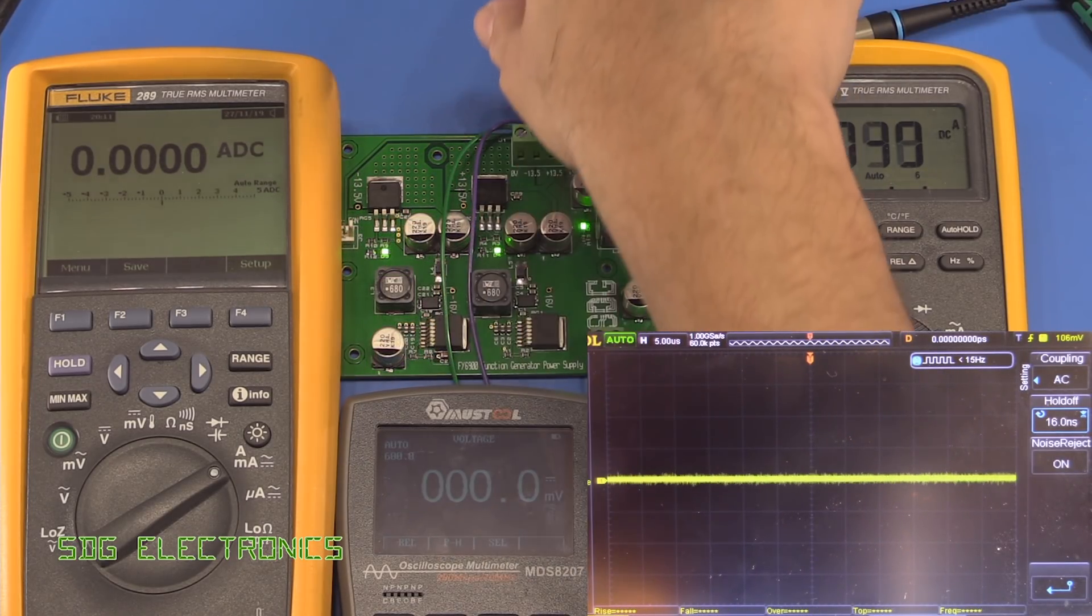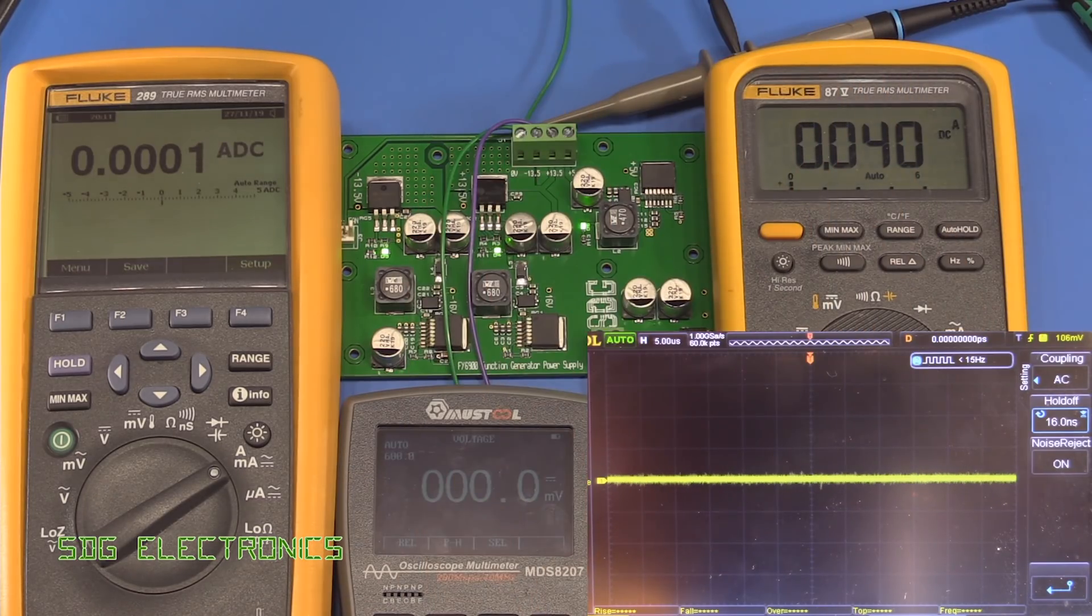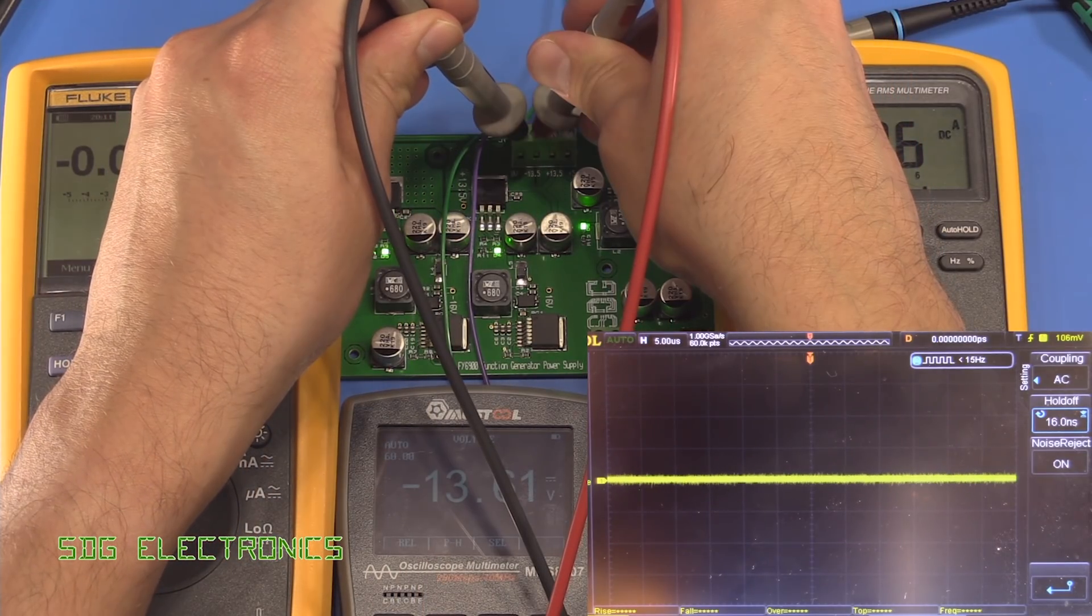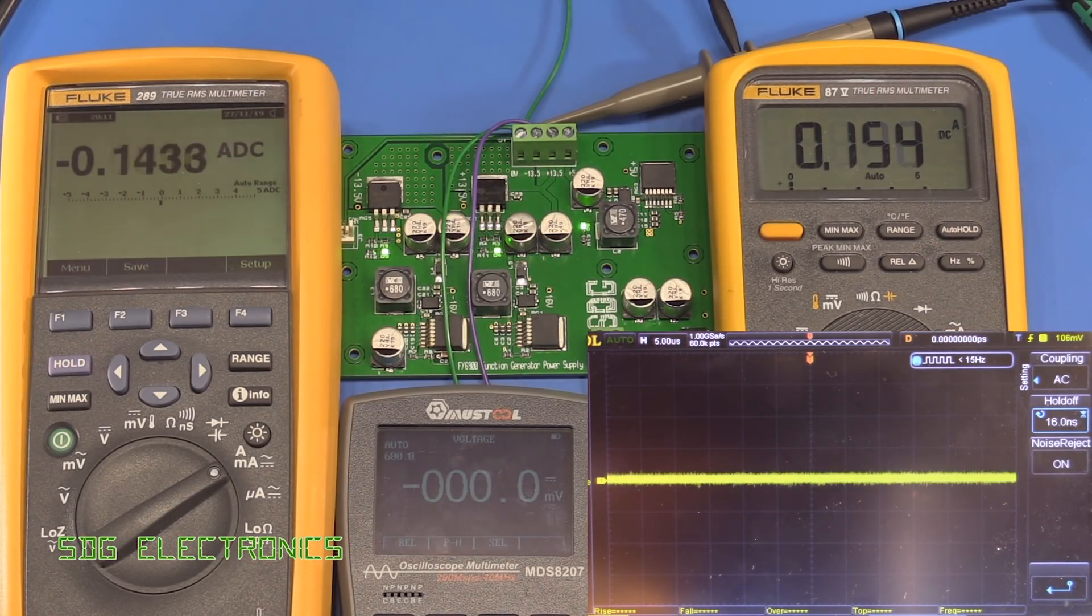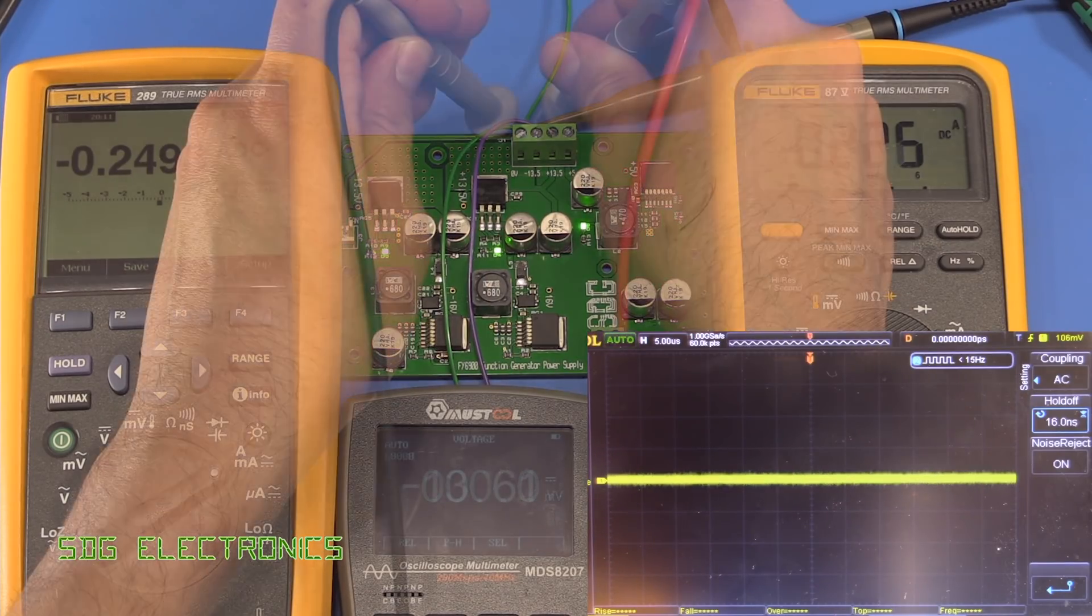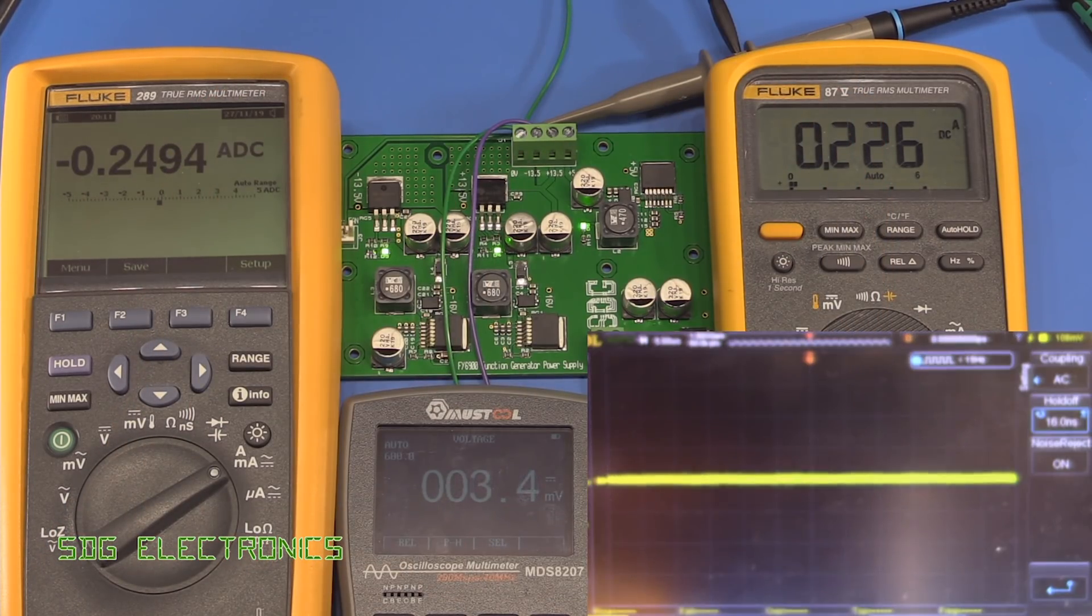We're now looking at the minus 13 and a half volt rail. Again we're seeing very little noise here. Let's turn on the load and set it to about 100 milliamps or so. That looks pretty good. It's very little noise. Again, let's have a look at the output and just check that we're reading what we should do. Yeah, minus 13 and a half. Let's turn up the load a bit more to 250. I think there's just very slightly more noise there. Still okay on the output voltage, start turning up a bit more.